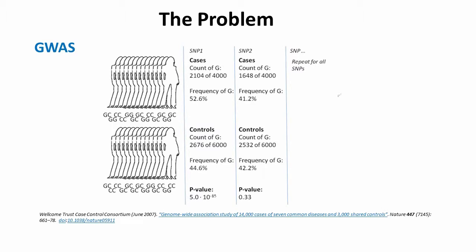This slide shows an example calculation illustrating the methodology of a case-control genome-wide association study. The allele count of each measured single nucleotide polymorphism is evaluated — in this case using a chi-square test — to identify variants associated with the trait in question. The numbers in this example are taken from the 2007 study of coronary artery disease, which showed that individuals with the guanine allele of SNP1, RS1333049, were over-represented amongst coronary artery disease patients.